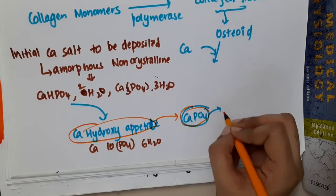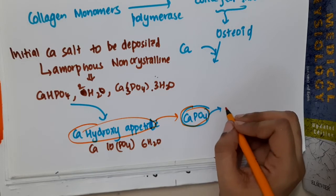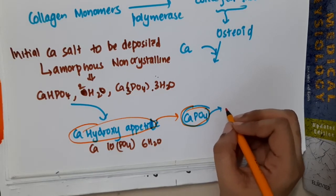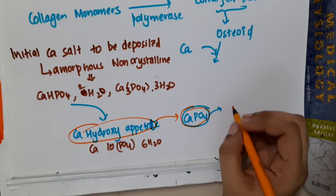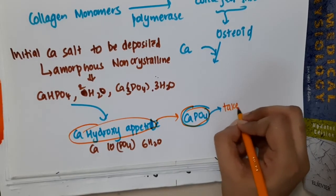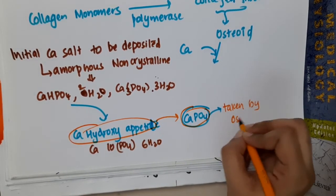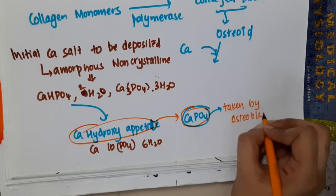The calcium phosphate is taken up by osteoblasts from the blood.